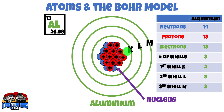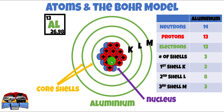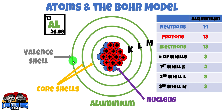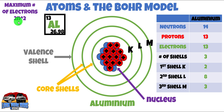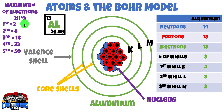We've got three shells here and they're named K, L, and M. The one of most interest to us is called the valence shell. You can only get a certain number of electrons per shell, and this is how you work it out. The maximum number of electrons is 2n², where n is the number of shells. So for the first shell: two electrons; second shell: eight electrons; third shell: maximum 18 electrons; fourth shell: 32 electrons, and so on.